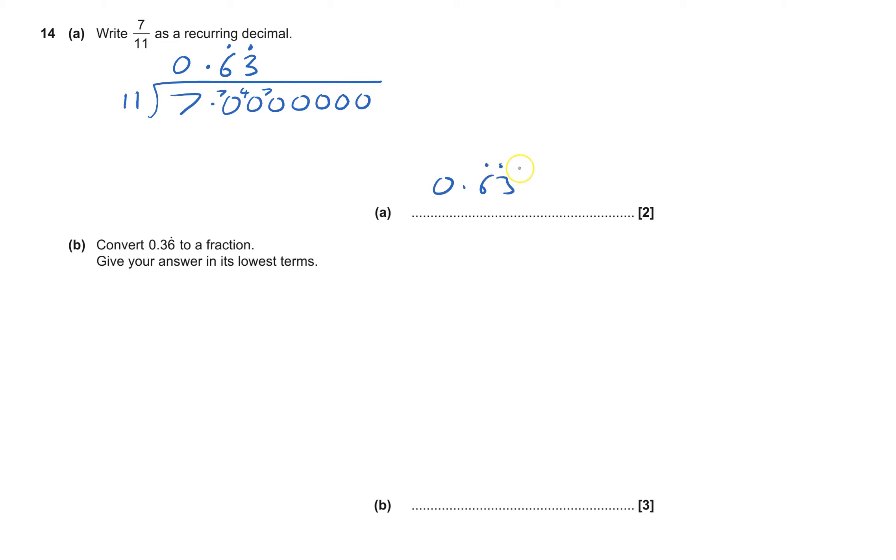Here I've got to convert a recurring decimal to a fraction. I always like starting with x equals, and leave a bit of space. So x equals 0.36 with the dot just above the six, so therefore it's the six recurring, and that goes on forever.